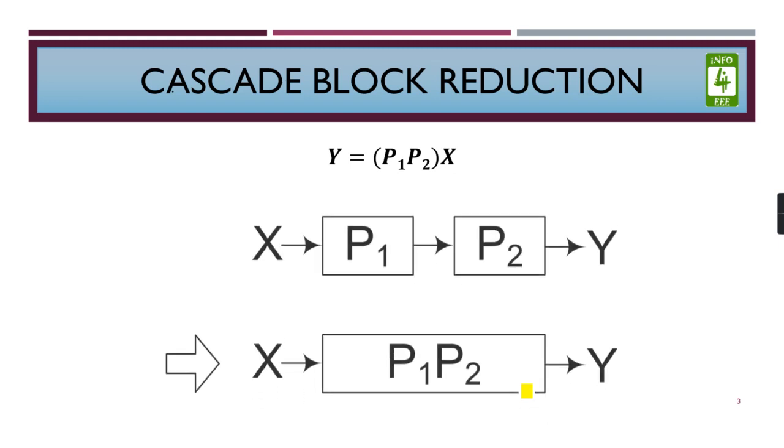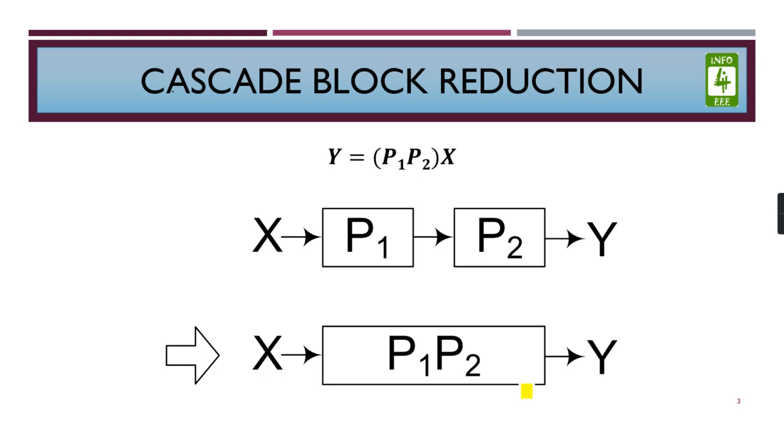So starting with this topic. The first point is the cascade block reduction where Y equals P1, P2, X. Now this Y is the output and X is the input and P1 and P2 are the blocks. So if they are connected in cascade, the output will be the product of two blocks, that is P1 into P2.